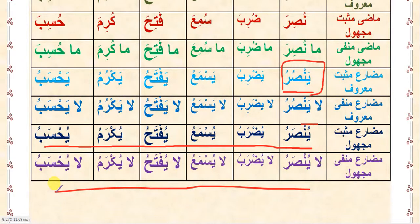So for majhool in mazi and mudari we have the same pattern, so there is no need to get confused while making majhool from any bab. For manfi in majhool simply add 'la'. But the question arises: if mazi majhool has the same i'rab in all babs and mudari majhool has the same i'rab in all babs, how can we recognize by simply seeing the i'rab which bab a fi'l belongs to? For this you have to remember Sifat-ul-Masadir.